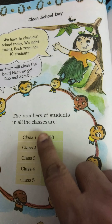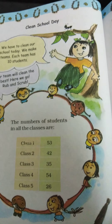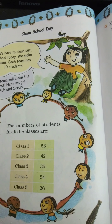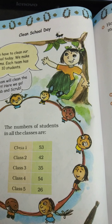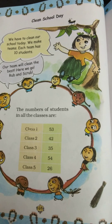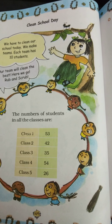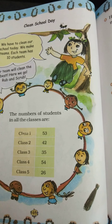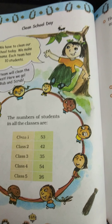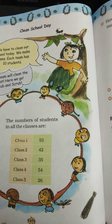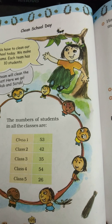In class 1, there are 53 students. As you know the concept, 53 means 50 plus 3. So 50 means 5 tens.